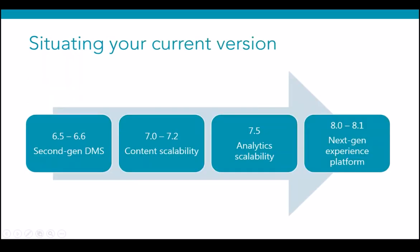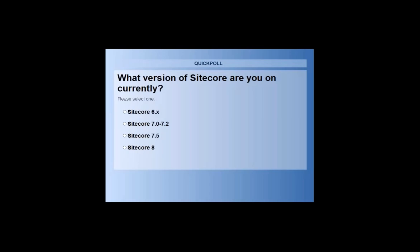In terms of upgrading, the first thing to do is get a sense of your current version and where you're situated. Most organizations are sitting somewhere between 6.5 and 8.1 at this point. There are a few folks who might be on lower versions of 6 still. This chart gives you a basic sense of how Sitecore has increased the features in each version as they've gone up.